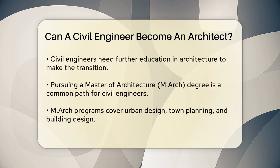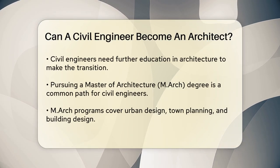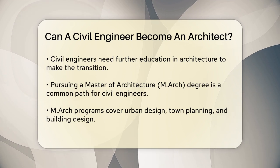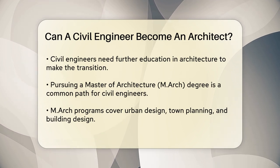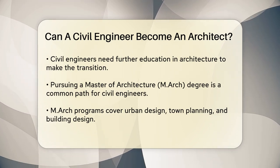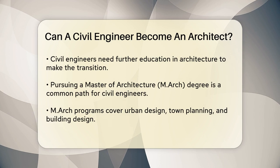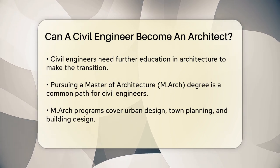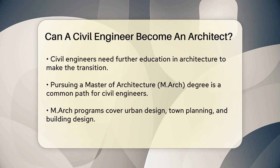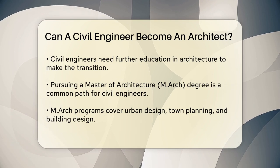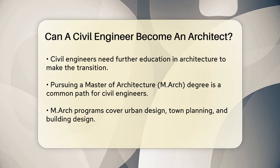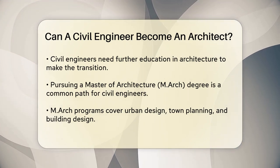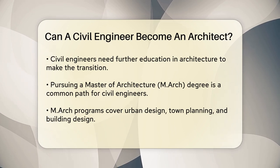To become an architect, a civil engineer would need additional education and training in architecture. This could involve pursuing a Master of Architecture (M.Arch) degree, which covers subjects like urban design, town planning, and building design. This program helps bridge the gap between the technical skills of a civil engineer and the creative and design-focused skills of an architect.